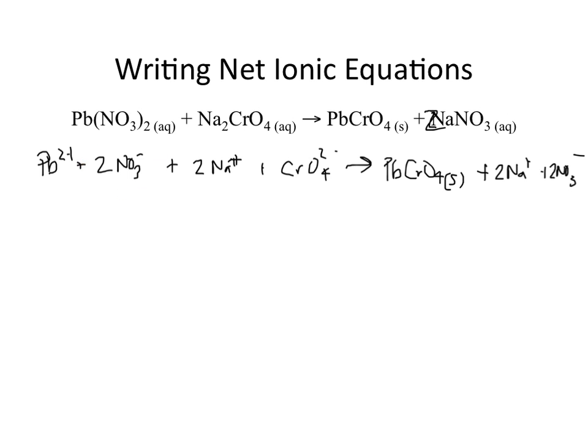Notice the nitrate shows up on both the left and right-hand side of the equation. So you subsequently cross them out. Same thing is true for the sodium ion. Chromate in this example does not show up as an ion on the right-hand side, so you leave it be.